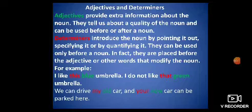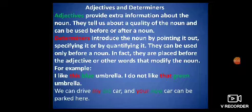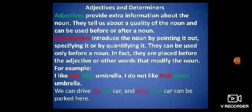See the example: 'I like this blue umbrella. I do not like that green umbrella.' Here, adjectives are highlighted in green and determiners in red. Umbrella is the noun. Blue is qualifying umbrella — what type of umbrella? Blue umbrella. And before blue, you can see 'this', which is the determiner specifying the noun. Similarly, green is an adjective qualifying umbrella, and 'that' is the determiner specifying that green umbrella.